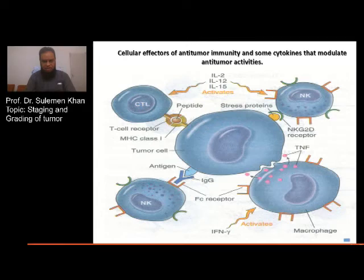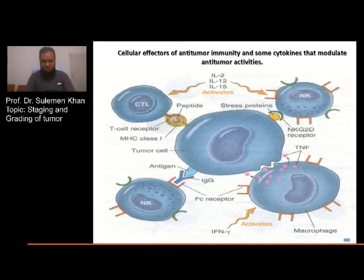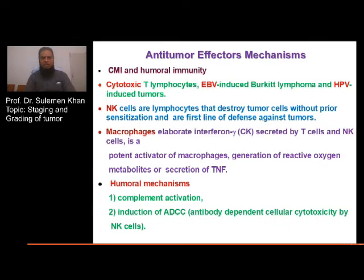Tumor cells express antigens, and antibodies — IgG — are formed against these antigens, which become attached to FC receptors on NK cells. The macrophage, shown in the lower right, is activated by gamma interferon and also has FC receptors. On the upper left panel, the cytotoxic T lymphocyte is shown expressing receptors for peptides presented by tumor cells via MHC class I molecules, attaching through the T cell receptor. In this way, the tumor cell is surrounded on all sides — by cytotoxic T lymphocytes, NK cells, and macrophages — and ultimately destroyed.